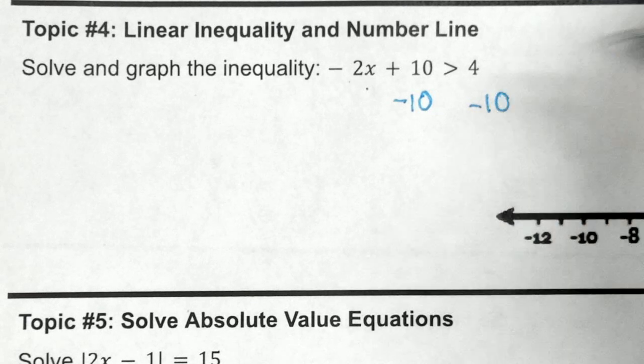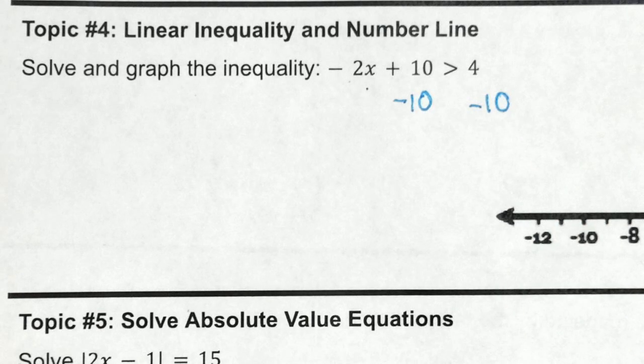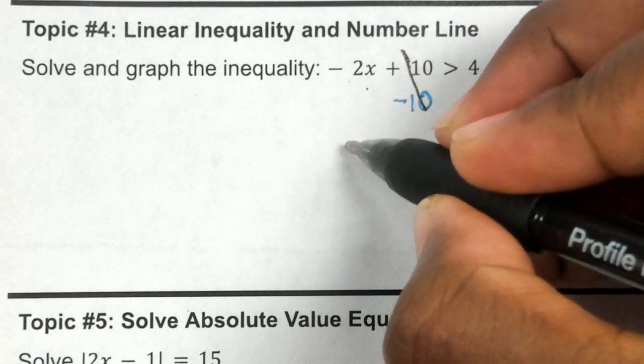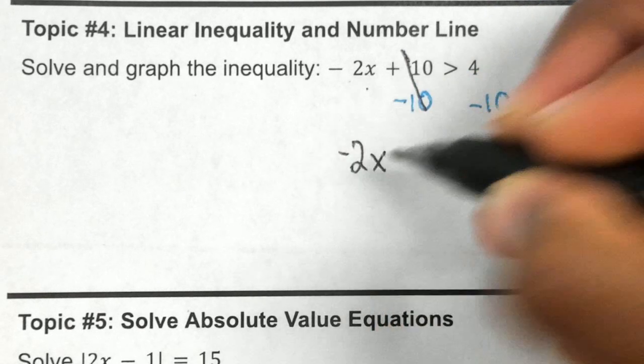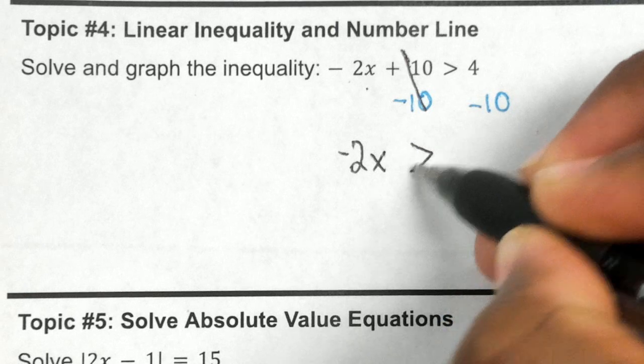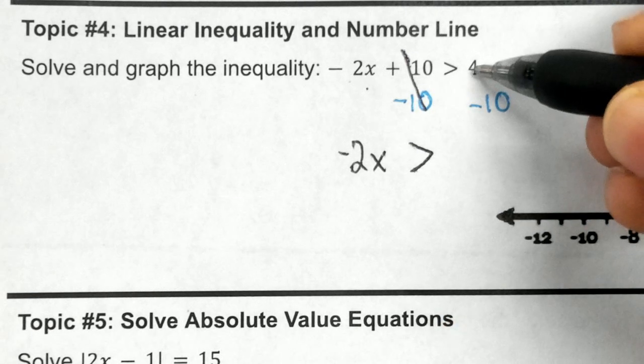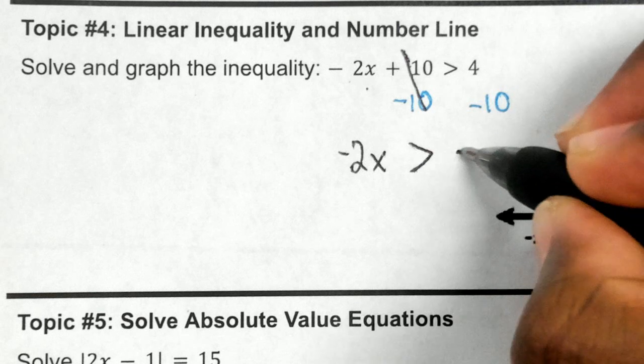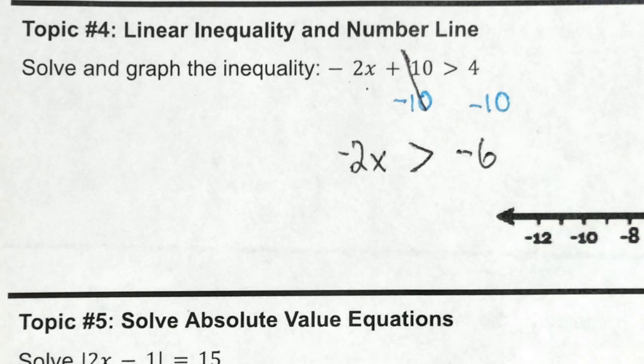This gets canceled out and the negative 2x I would bring it down. Our greater than sign I would bring it down also. Here we'll calculate 4 minus 10 is negative 6.